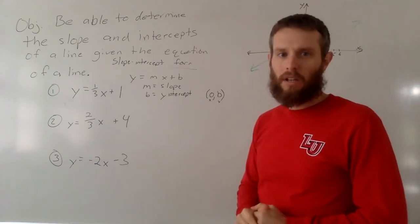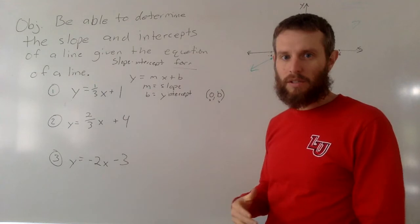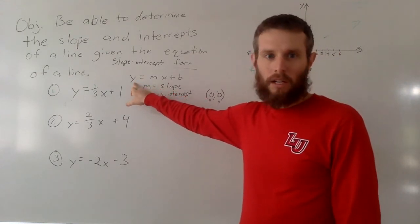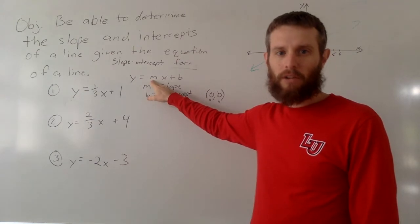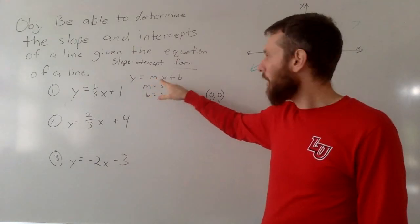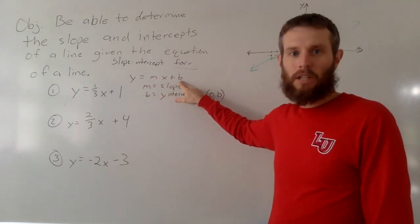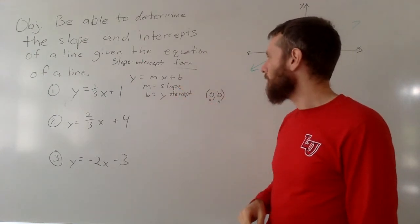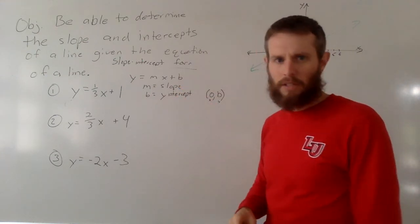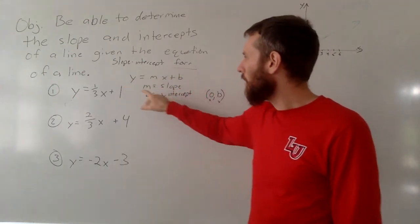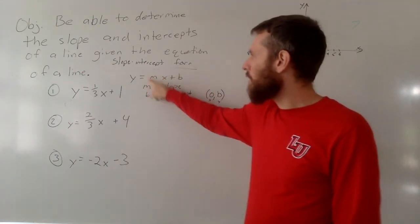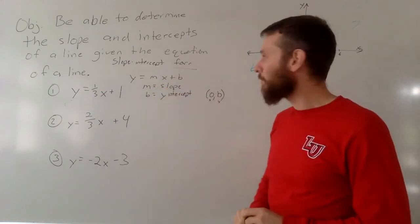So again, when it's written in the slope-intercept form, you'll have y, still be the variable y, equals, m will be a number or a fraction, then you have the variable x, and b will be a number or a fraction. Maybe a better way to say this is an integer or fraction. And by looking at it, when it's written in this way, we know that whatever m is, is going to be the slope.